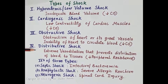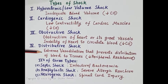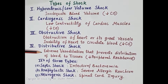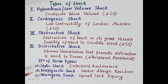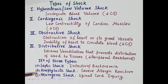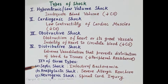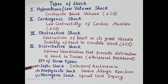The fourth type of shock is distributive shock. In this shock, the heart pumps well, but there is extreme vasodilation, and this extreme vasodilation prevents distribution of blood to the tissues. There is a fall in peripheral resistance because of vasodilation. Distributive shock is of three types: septic shock, anaphylactic shock, and neurogenic shock.